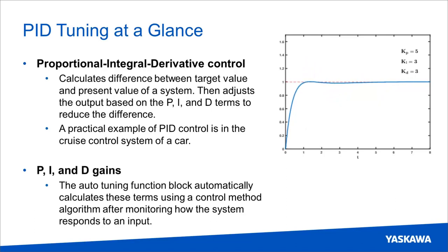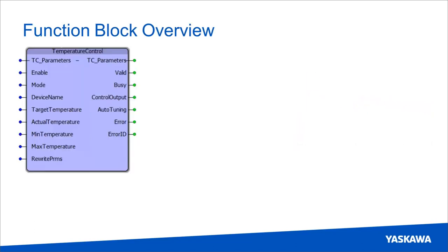And to compensate, KD is increased, dampening the oscillations. And by utilizing the PI and D gains, the system is quickly brought to the target and held.